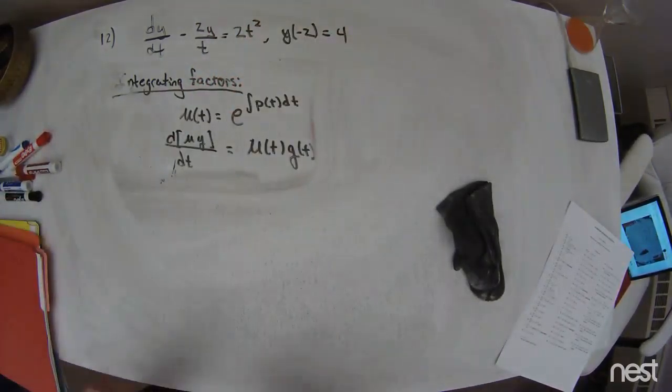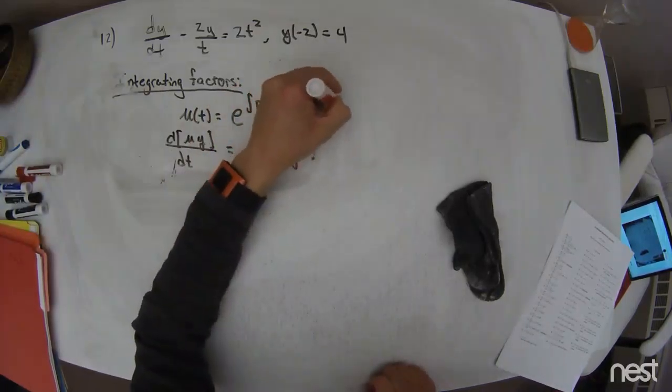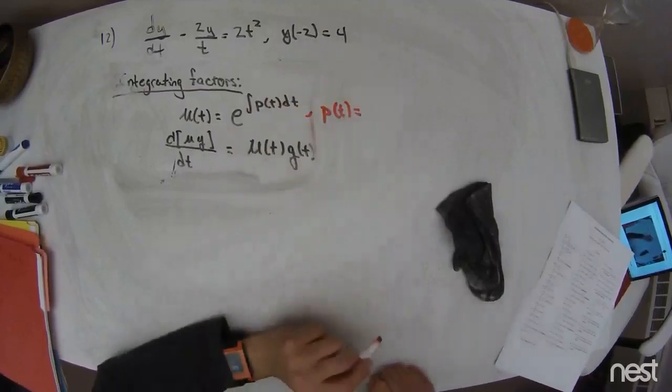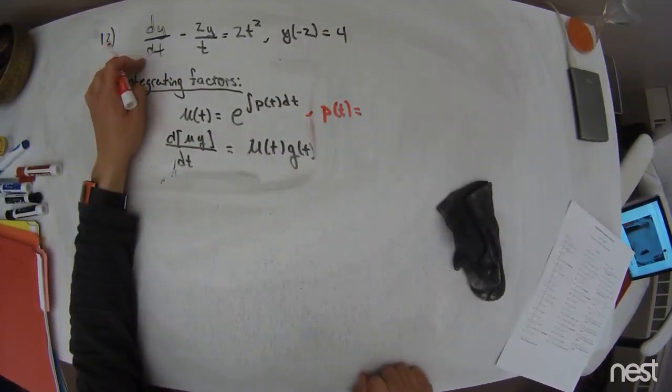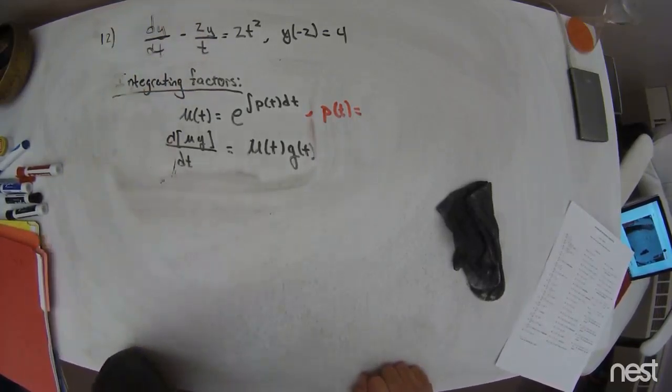All right, so I get p of t is equal to, okay, this is in standard form. It's first order, right? The first order derivative is raised to the first power. The y is raised to the first power.